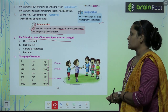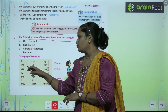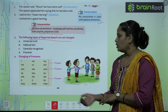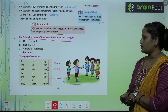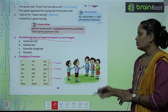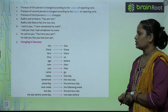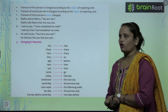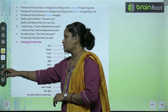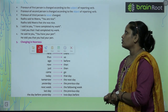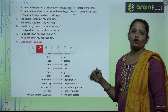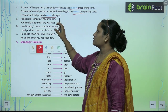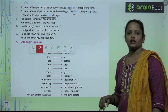Changing of pronouns — pronoun ko kaise change karte hain: First person mein I, we, me, us, my, our use hote hain. Second person mein you, your. Third person mein he, she, it, they, him, her, it, them, his, her, its, their. Pronoun of first person is changed according to the subject of the reporting verb. Pronoun of second person is changed according to the object of the reporting verb. Pronoun of third person is never changed. Example: 'Radha said to Meira you are nice' becomes 'Radha told Meira that she was nice.'